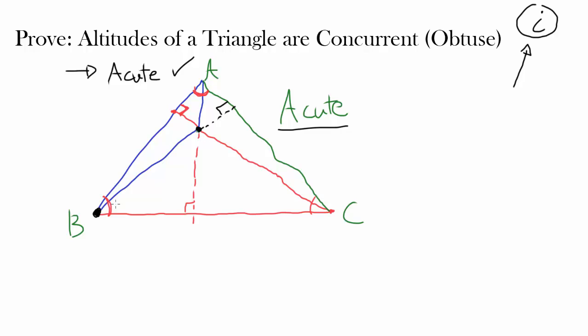If two altitudes meet at some point, and you're drawing another segment starting at a vertex to that point, it is going to be altitude.